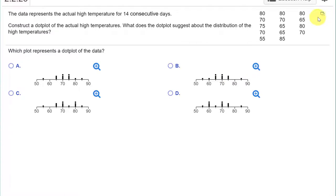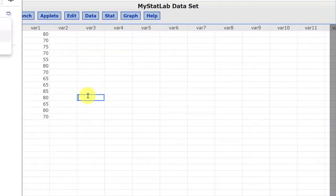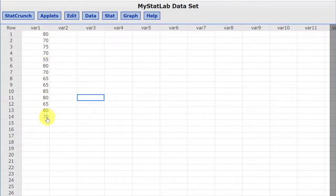We're going to use StatCrunch. That's the quickest way I know to do it. Just click on the little blue rectangle and then open in StatCrunch. Okay, I have StatCrunch open with that data in the column labeled variable one.